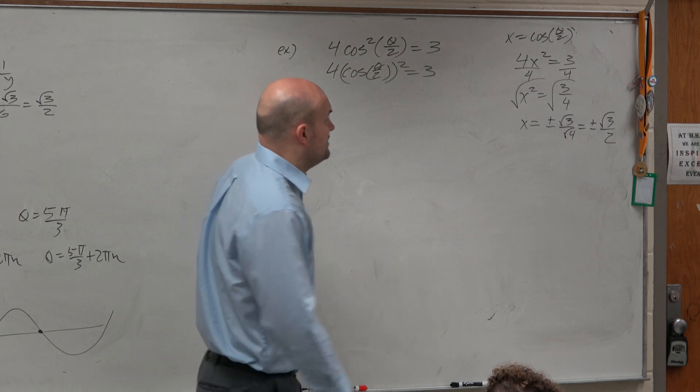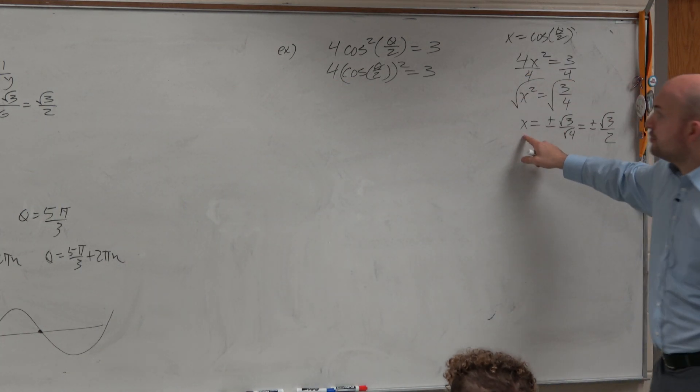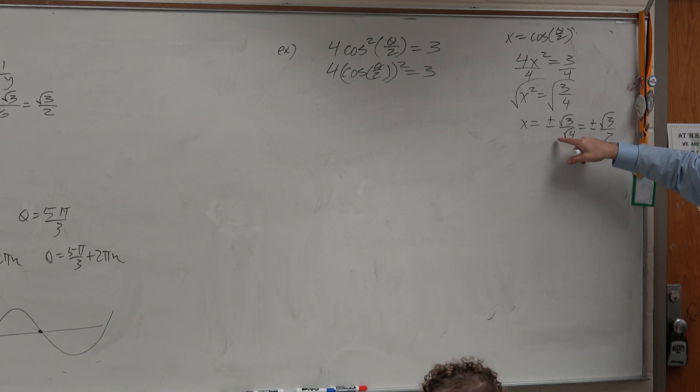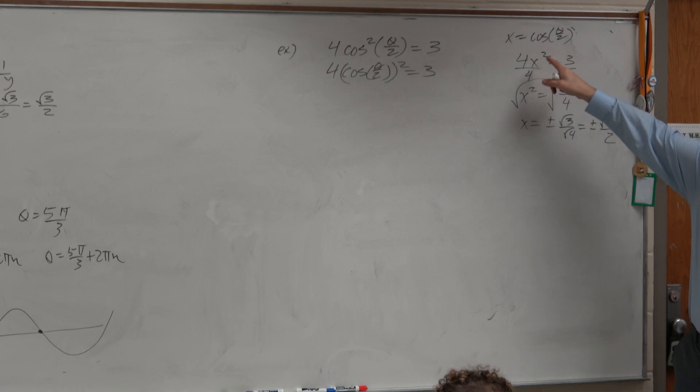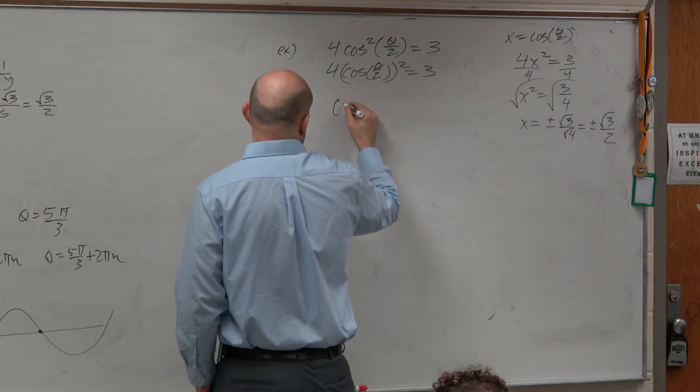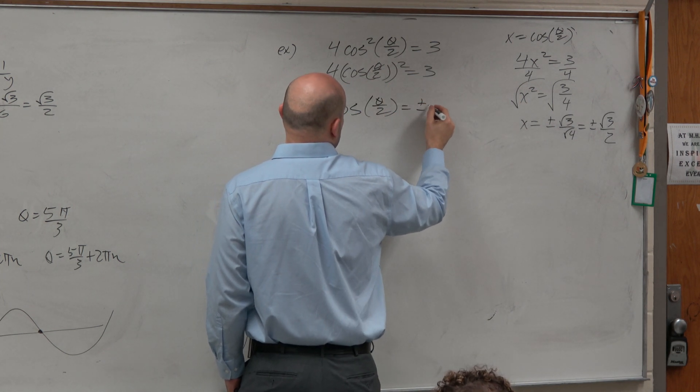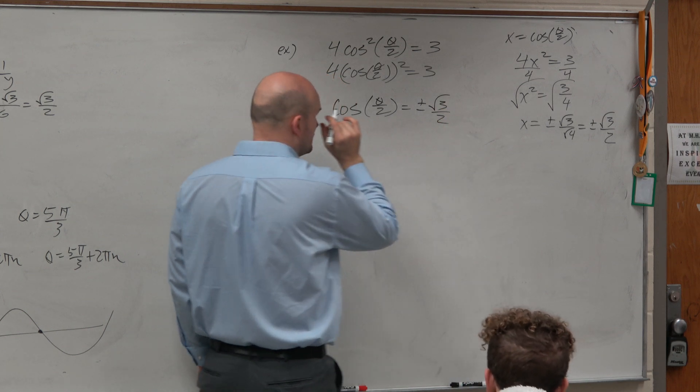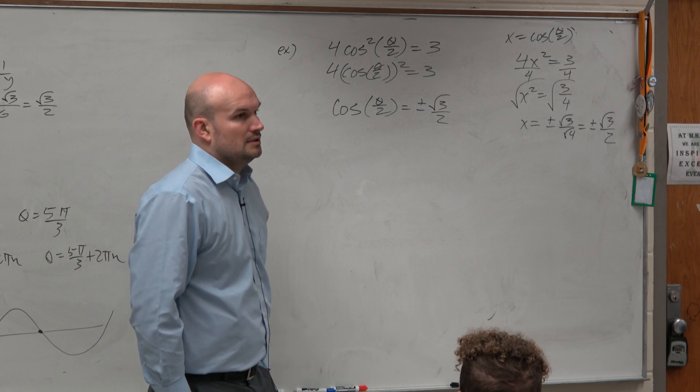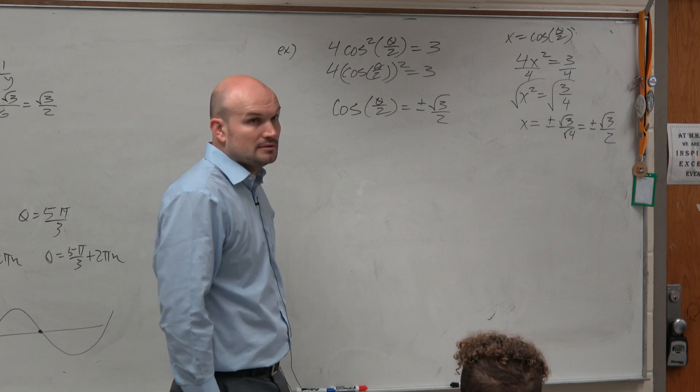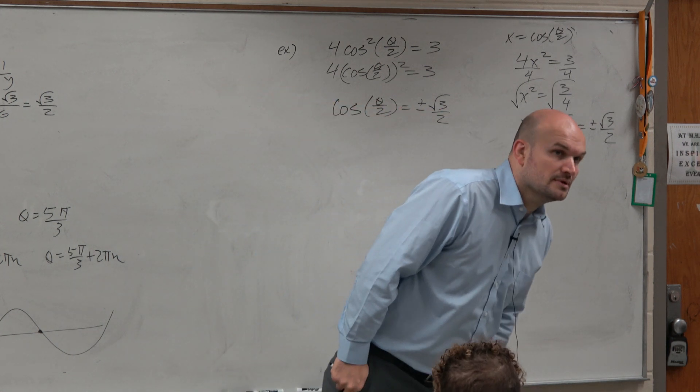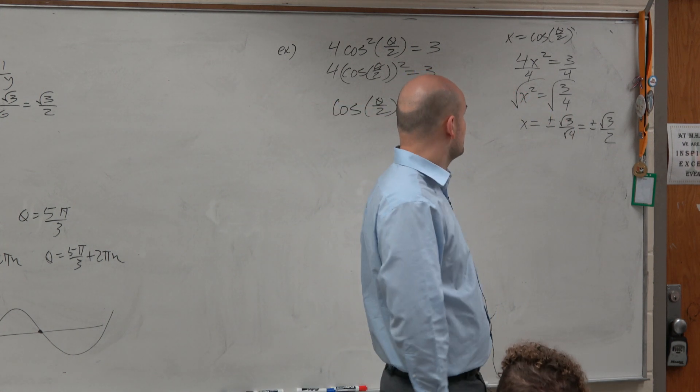So therefore, we can now go back to our original equation and say x equals, or what is x equal? x equals cosine of theta divided by 2. So now we're going to say cosine of theta divided by 2 equals plus or minus the square root of 3 over 2. Yeah? Yeah. Yes, question. No.